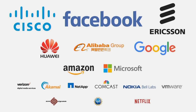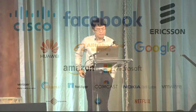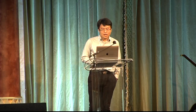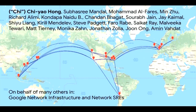My name is Chi. I'm from Google. This is joint work with my colleagues at Google, and this is truly a cross-team collaborative project. The B4 network evolution would be impossible without contributions from many others in Google's network infrastructure team and network SREs.